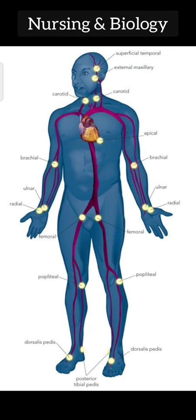Femoral at the groin, popliteal on the lateral side of the knee, dorsalis pedis, posterior tibial — these are the pulse points in the human body.